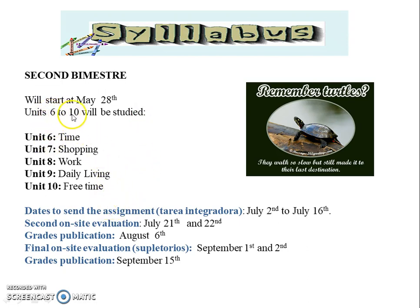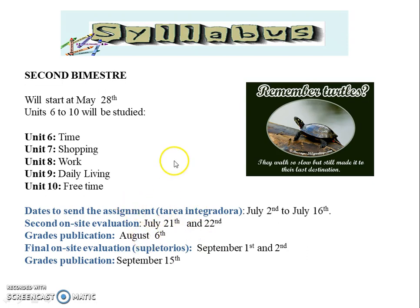The second semester covers units 6 to 10: time, shopping, boarding, the city, events, and free time. The dates for activities are due on July 2nd, and July 16th for the second on-site evaluation on July 21st and 22nd. Grades will be published from August 6th. If the necessary points are not reached, there will be a final exam held on September 1st or 2nd.